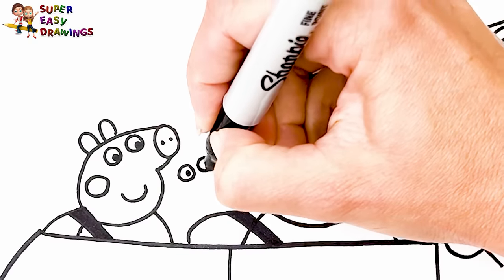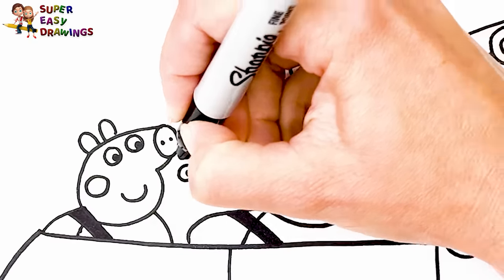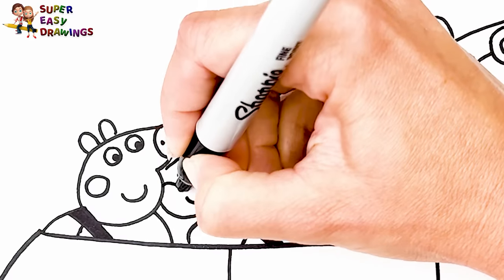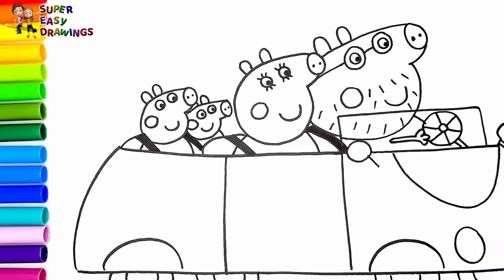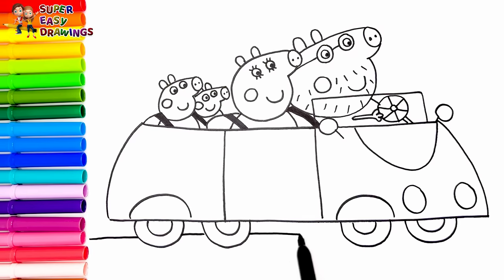Now let's draw George Pig next to her. I draw his eyes, his nose and the shape of his head. Then I draw his body. I draw a line here for the ground.